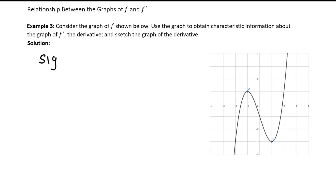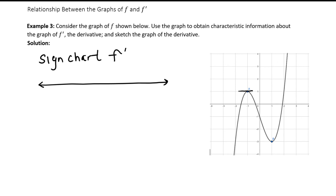To do this, we're going to make a sign chart — a number line — of the derivative function. Draw a number line and make some observations. For this graph, we have a horizontal tangent line where x equals negative 1. So when x equals negative 1, the derivative function — which is the slope of the tangent line — is going to be 0. Remember: horizontal line, slope is 0. The other point of significance occurs when x equals 1, because a tangent line drawn to the curve at x equals 1 is also horizontal, and the slope of a horizontal line is 0.